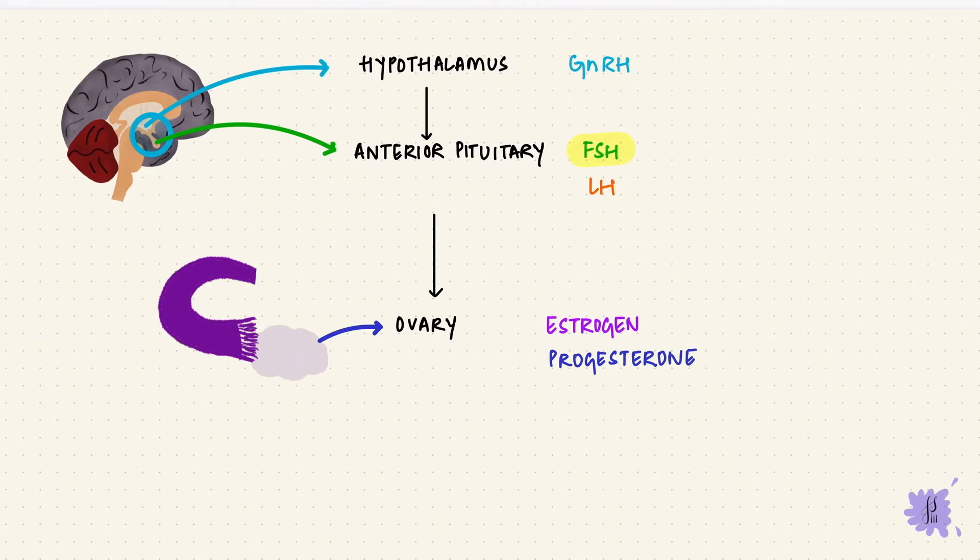During the ovarian cycle, we're going to see how FSH and LH influence the cycle, and also how the ovary produces estrogen and progesterone. But one thing is needed to understand how the hormones change during the cycle, and that is how estrogen has feedback effects. Through most of the cycle, estrogen has a negative feedback effect on both GnRH and the gonadotropins, that's FSH and LH, except when it crosses a threshold mid-cycle. That's when the feedback changes from negative to positive, causing both FSH and LH to rise. This happens just before ovulation.